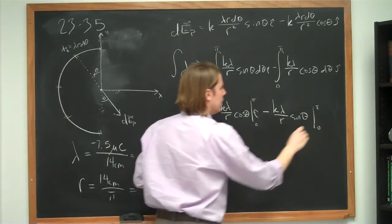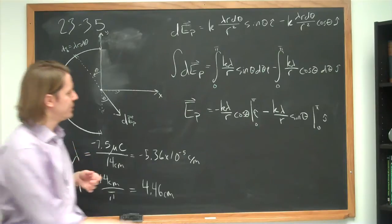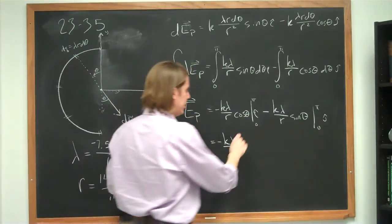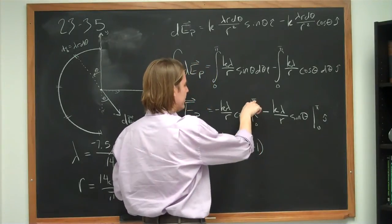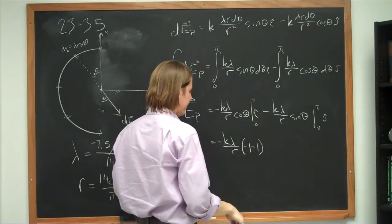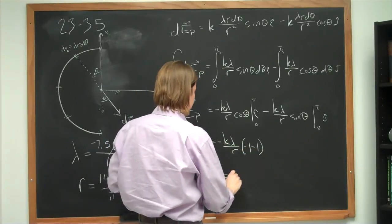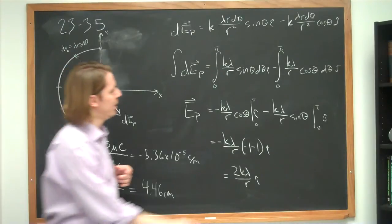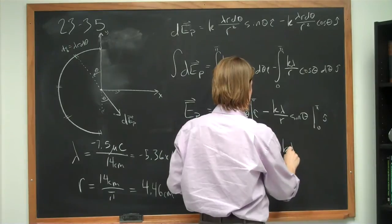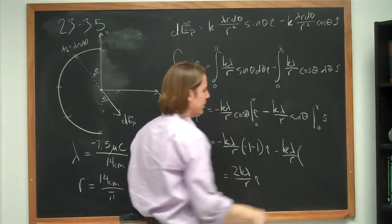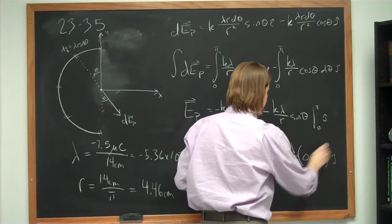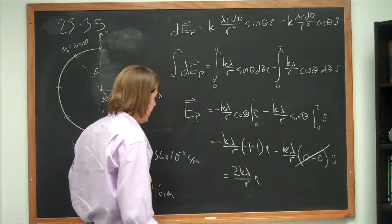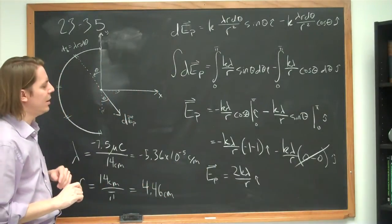Evaluating the integrals: for the x component, minus k lambda over r times cosine theta evaluated from 0 to pi gives cosine(π) = −1 minus cosine(0) = 1, which equals minus 2, so the negatives cancel and we get 2k lambda over r i-hat. For the y component, minus k lambda over r times sine theta from 0 to pi gives sine(π) = 0 minus sine(0) = 0, so the entire y component cancels — just as the symmetry argument predicted.